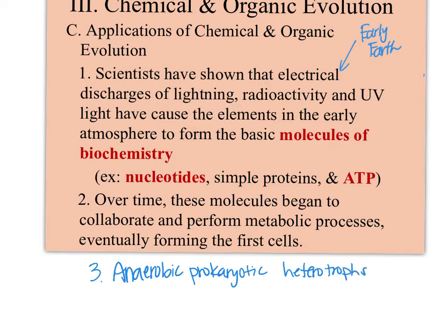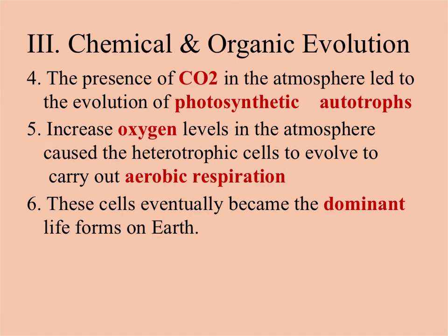The first cells are also thought to have been heterotrophic, feeding off chemicals through chemosynthesis. In a deep-sea volcanic vent, extremely hot conditions support chemosynthetic bacteria at the base of the food chain. Scientists believe those early anaerobic cells then evolved to become autotrophic — using carbon dioxide in the atmosphere to make their own food through photosynthesis — becoming photosynthetic autotrophs.